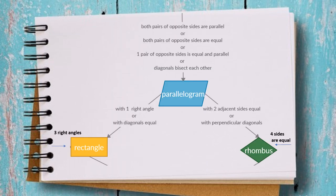Now we are going to build more on this map. If we prove that a quadrilateral is a parallelogram using one of those four methods, and we add to it one right angle, it will be a rectangle. That is one way. Another way: if it is already a parallelogram and the diagonals are equal, then it is a rectangle.